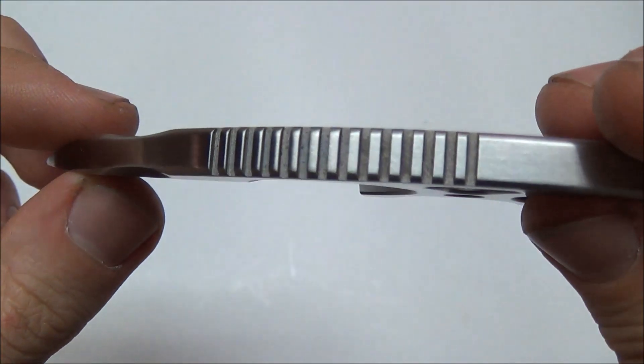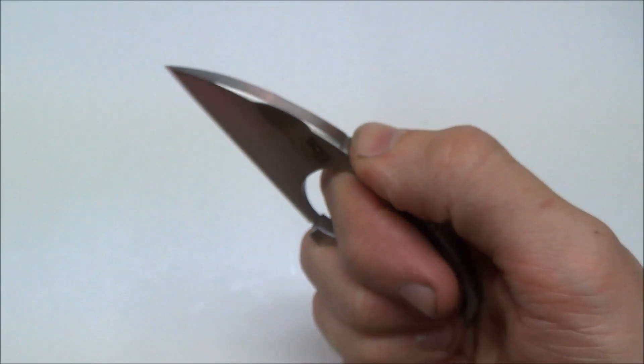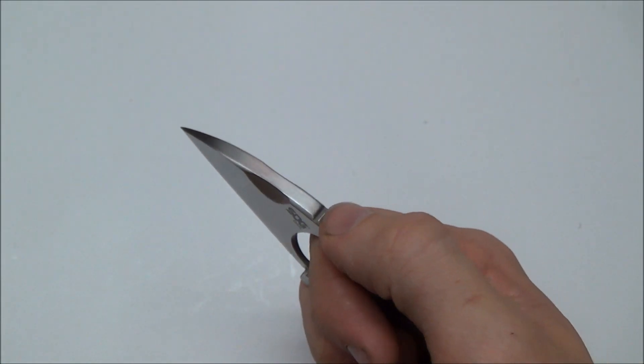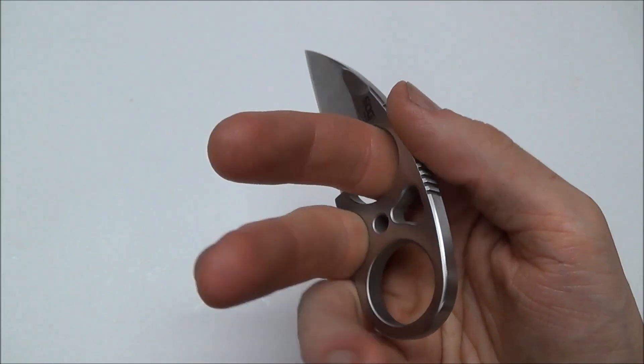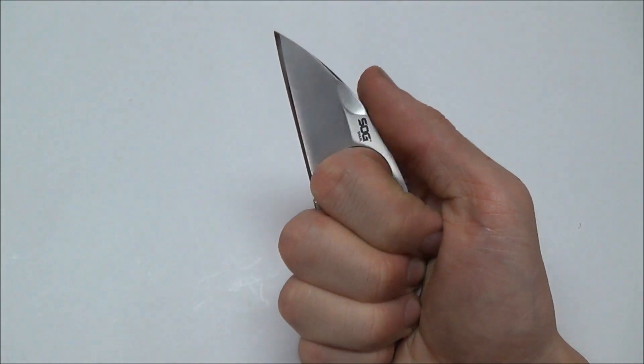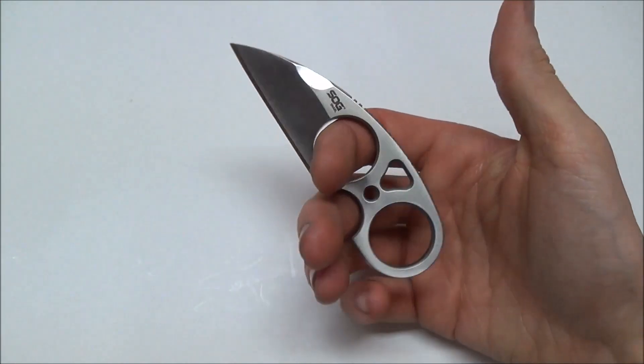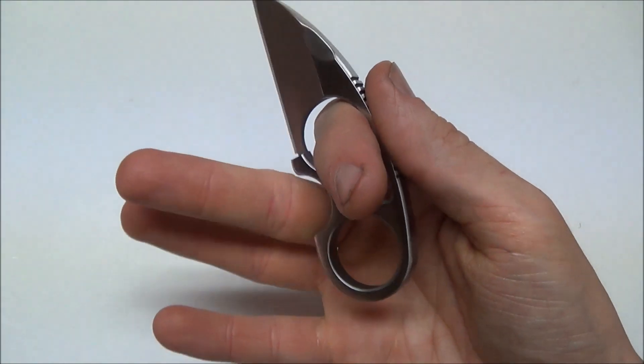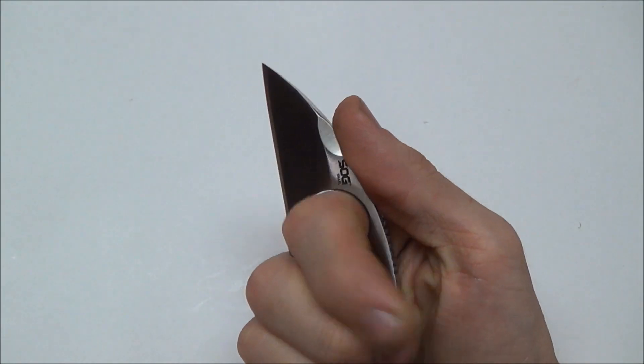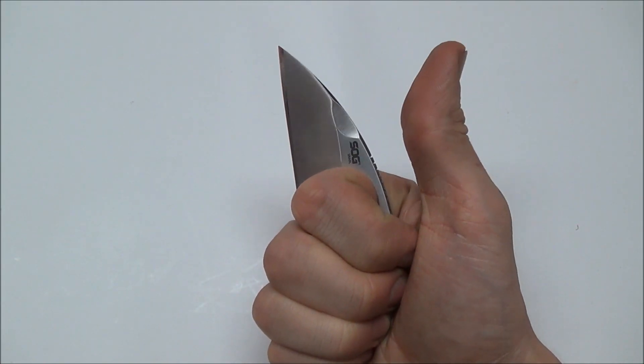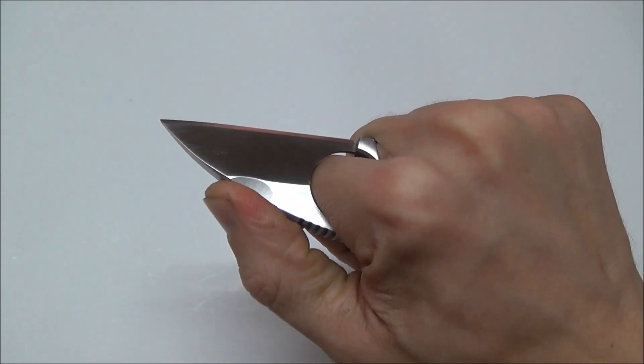Up top, you have some jimping. Very functional jimping, I might add. It is just aggressive enough, not painful. My only problem with it is that, to me, it's in the wrong place. When you're holding this knife, I think the most universal, most practical grip you're going to have this knife in is going to be this. Your index finger in the first hole here, and your middle finger here in this cutout. That's the most universal, or the most effective grip, I believe. Now, when I grip it, my thumb is wanting to rest closer towards the tip on the spine, where there is no jimping.